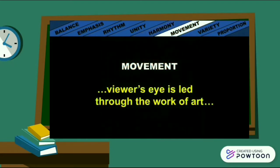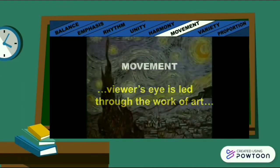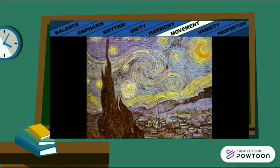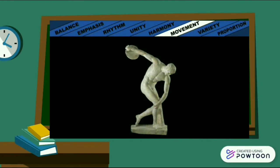Movement is a principle of design. Movement is the way in which the elements of design are organised so that the viewer's eye is led through the work of art in a systematic way. In Starry Night by Vincent van Gogh, the artist directs the viewer's eye through the painting using directional brush strokes, achieving movement through texture. In the sculpture called the Discus Thrower, the viewer's eye moves along the curved limbs, achieving movement through carefully placed forms.